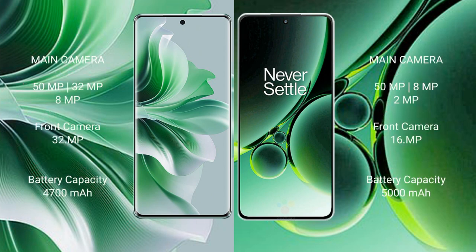OPPO Reno 11 Pro features a rear triple camera setup of 50MP plus 32MP plus 8MP and a front camera of 32MP. OnePlus Nord 3 features a rear triple camera setup of 50MP plus 8MP plus 2MP and a front camera of 16MP.